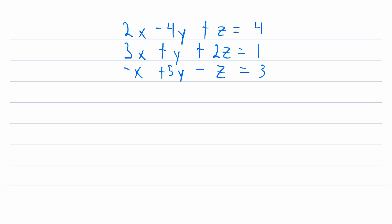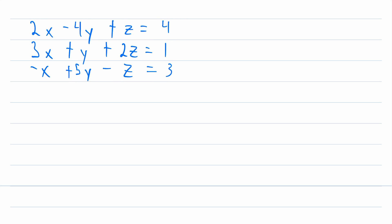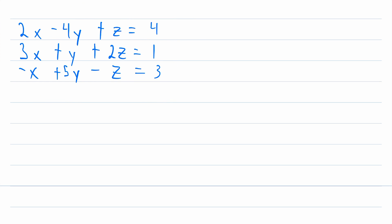One of the most common uses of augmented matrices is to use them to solve systems of linear equations. Here we have such a system — three linear equations where all the variables and their coefficients are on one side of the equations and all the constants are on the other side. It's pretty cool how we can use matrices to solve this system. We won't go over the whole process in this video because it can take a while — I just want to give you a little intro of how augmented matrices are used in this process.